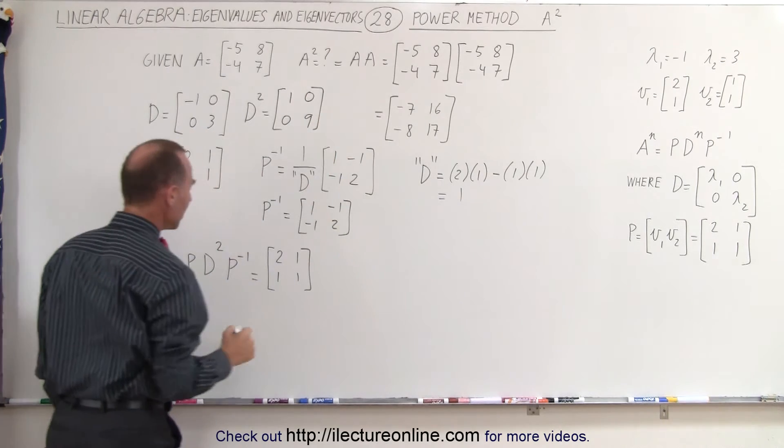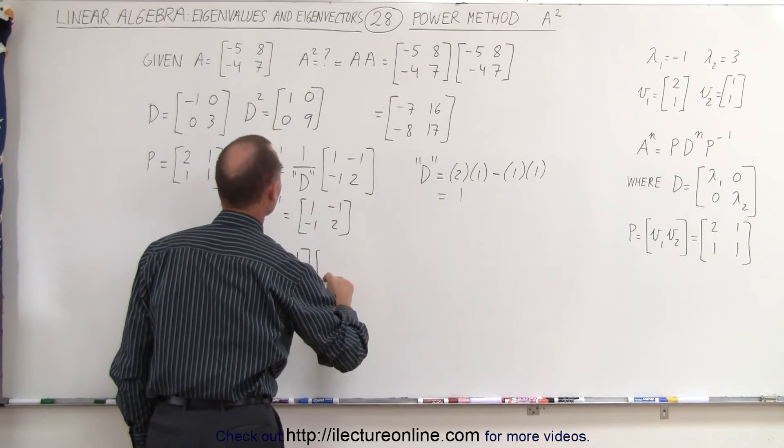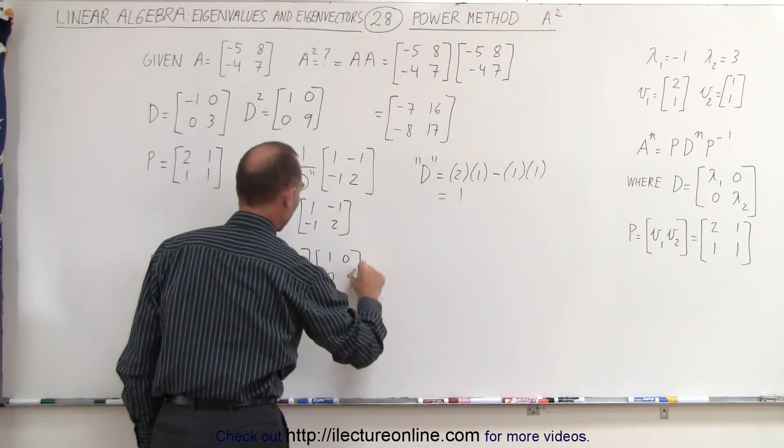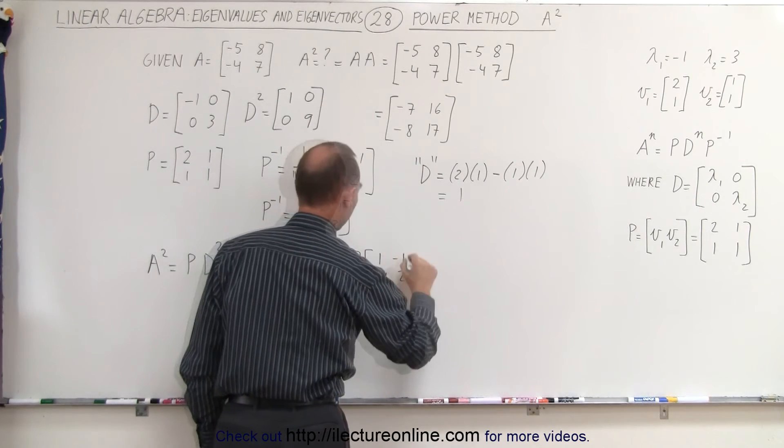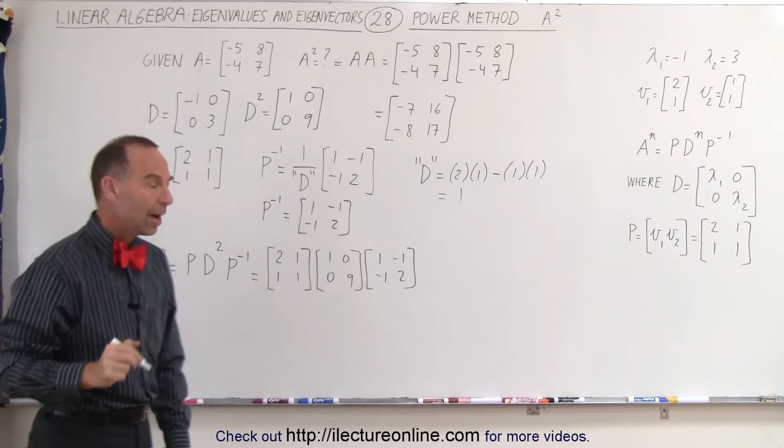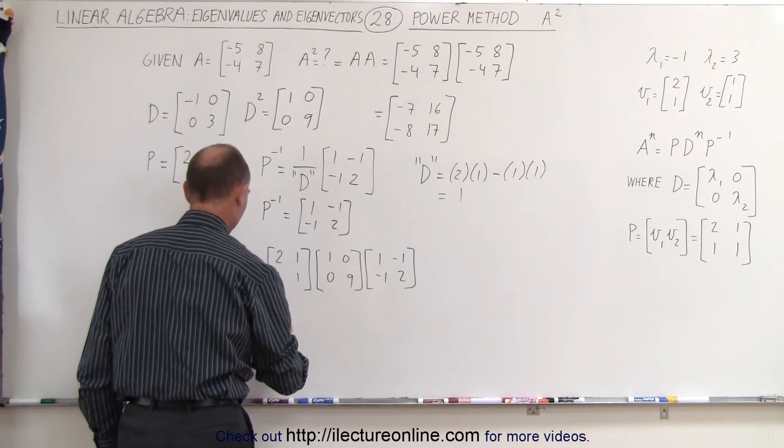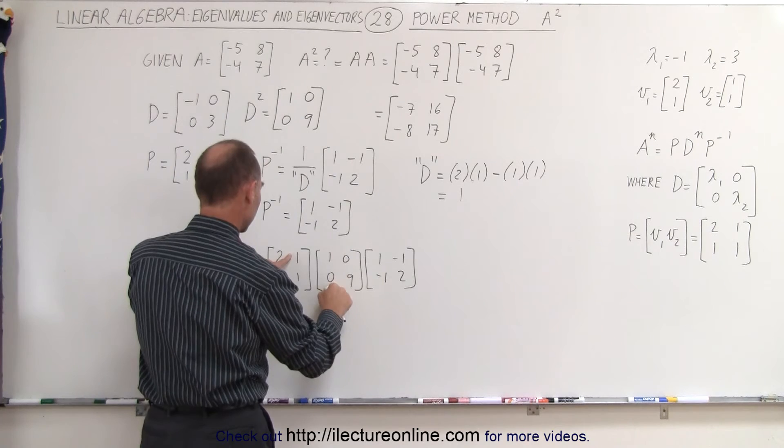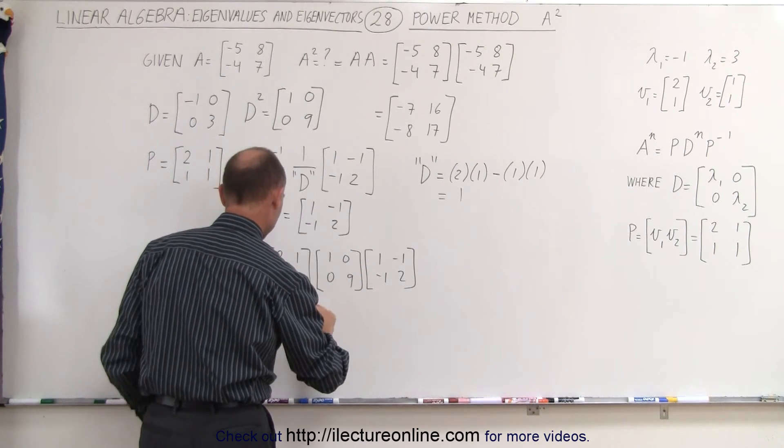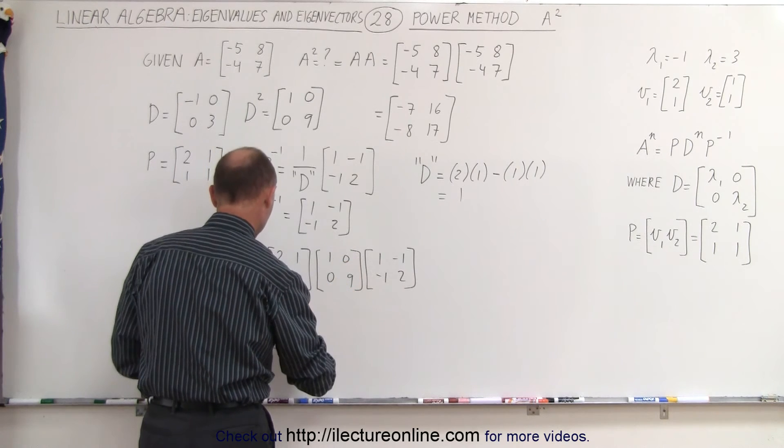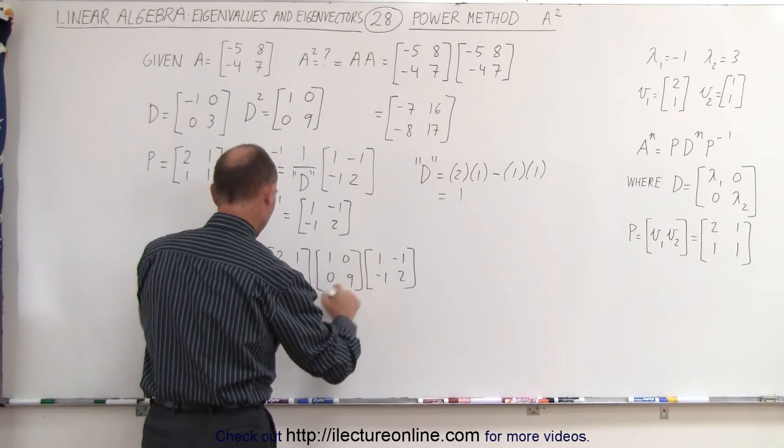And that makes it quite easy. So we'll go ahead and plug that in here. That's 1, 0, 0, 9. And then we have the inverse P matrix, 1, negative 1, negative 1, and 2. Now we're going to multiply these two matrices together. This is equal to 2 plus 0, 0 plus 9, 1 plus 0, and 0 plus 9.